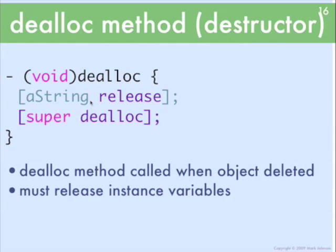And you can actually do that another way as well. You could have said self.astring equals nil. So, if you set a retained property to nil, then before it assigns the property to nil itself, it's going to release the old value of the property.